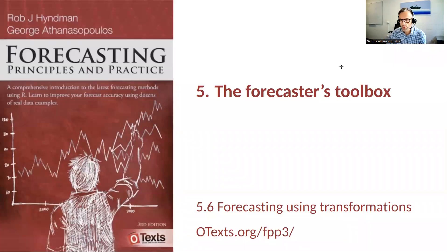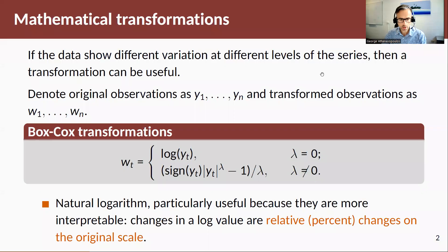Remember that in section 3.1 of the book, we saw that it is sometimes useful to actually take a transformation of the data. The general transformation we looked at was Box-Cox transformations. Transformations are useful for mainly two reasons: one is to stabilize the variance, and the other is that if we want to stay on the positive scale.